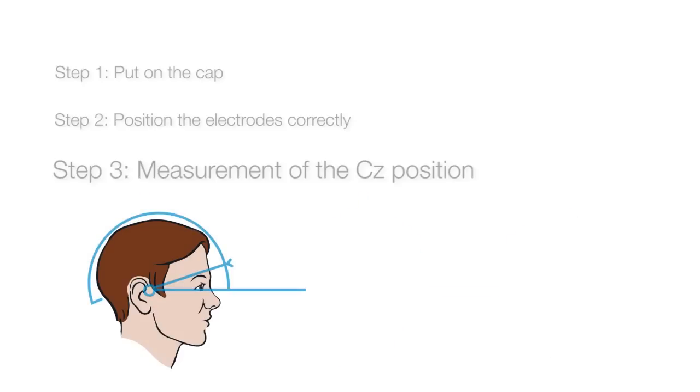The frontal electrodes FP1, FPz, and FP2 should be positioned at 10% of the nasion-inion distance, above the nasion point.